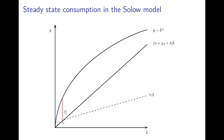Consumption can be read off the graph directly as the red line, which is consumption at the steady state C1* tilde for saving rate S1 - that is the difference between total production and gross investment in the steady state. Now if we have a higher saving rate S2, output per unit of effective labor is definitely higher, and consumption per unit of effective labor is also higher than with saving rate S1.